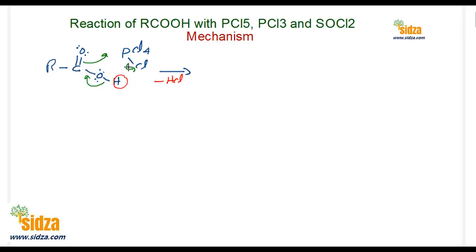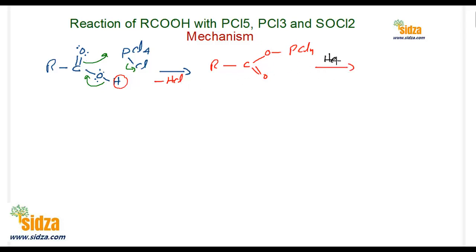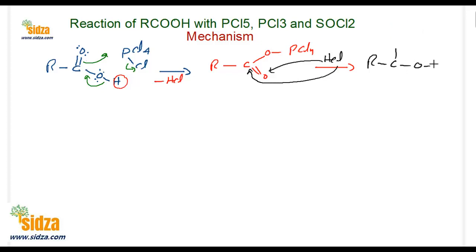The carbon then forms a double bond with oxygen, and this oxygen forms a bond with phosphorus, giving a PCl₄-containing intermediate. So first there is loss of HCl — PCl₅ and the carboxylic acid react together with loss of an HCl molecule. In the second step, the same HCl molecule adds back to the carbonyl group: chlorine goes to the carbon and hydrogen goes to the oxygen.